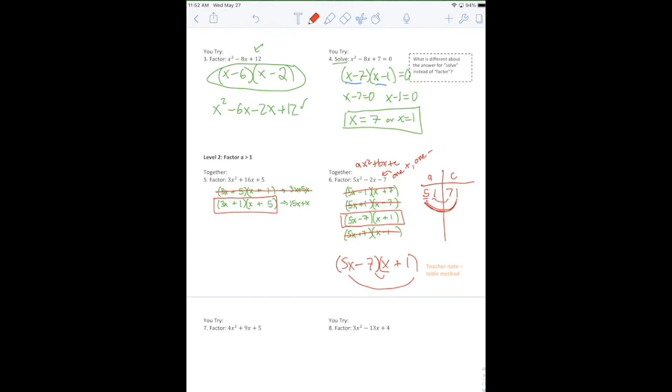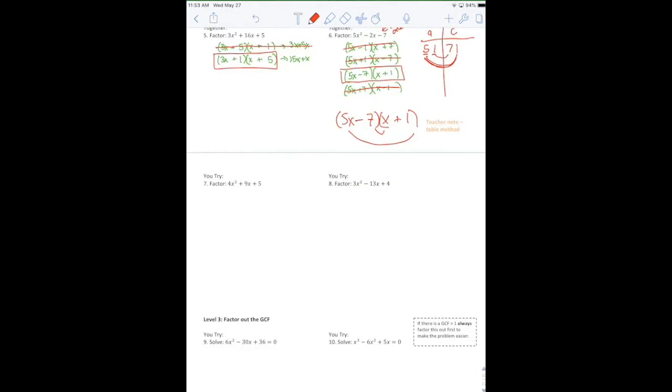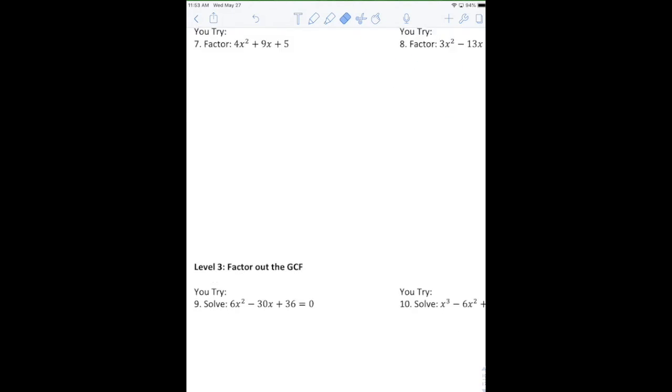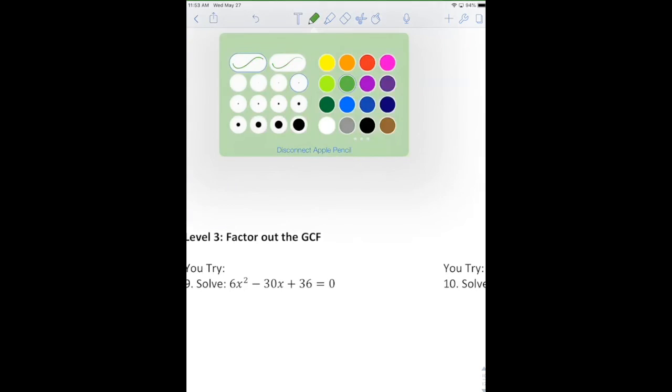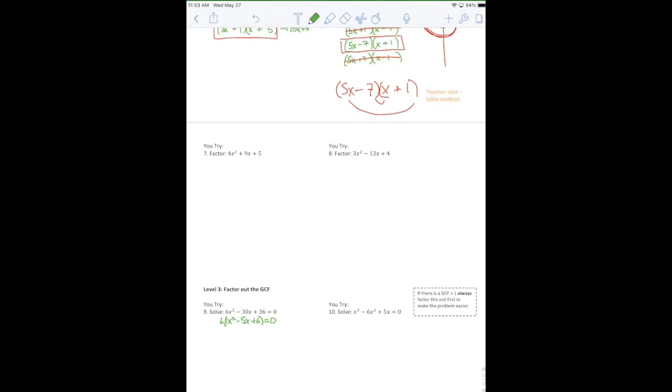One other thing I do want to point out quickly is if you look down at number nine, always look for a greatest common factor first. I would look at this and say, there's a lot of factors of six. But if I factor out my GCF first, if I factor out my six, then I get x squared minus 5x plus six. Well, that's beautiful because if I have a one in front of my x squared, it becomes a much easier problem. Always look for your greatest common factor first.